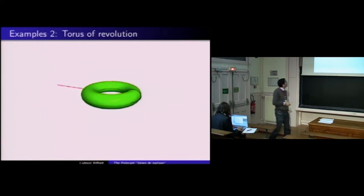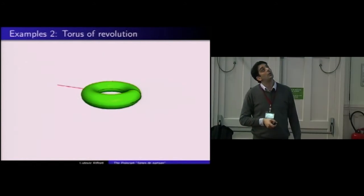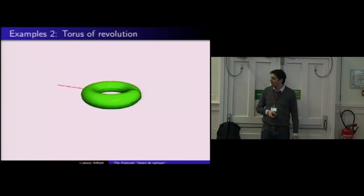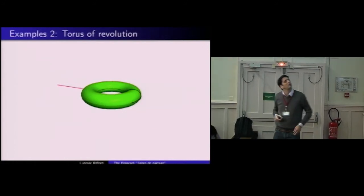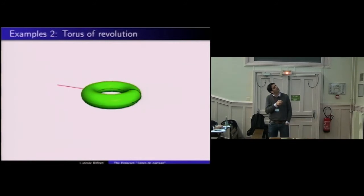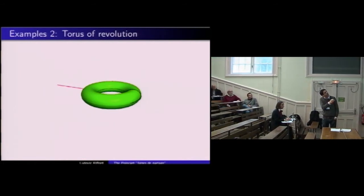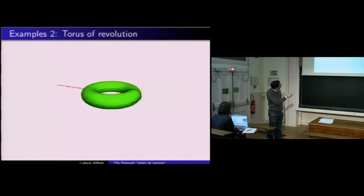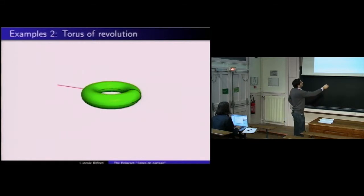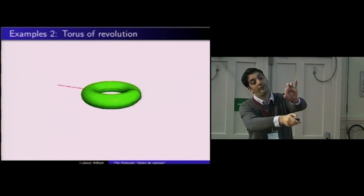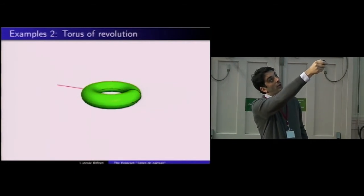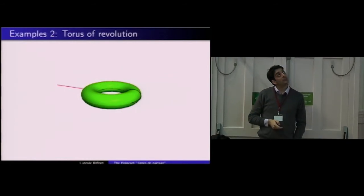Pour un tore de révolution, le cut locus d'un point sur le plus grand des cercles est composé de deux cercles et d'un petit arc, dont la longueur dépend de la courbure le long du grand cercle. Plus le tore sera fin, plus cet arc tendra vers le point de départ.